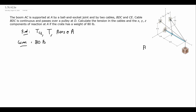As usual for a static equilibrium problem, we need to start with a free body diagram. I'm going to keep the coordinate system that we are given, passing through point A as our origin. The bar is going to go along the y-axis and terminate at point C. Point B along the way is also important. We have a pulley at point D that lies on the XZ plane, and point E up here will be used as well.